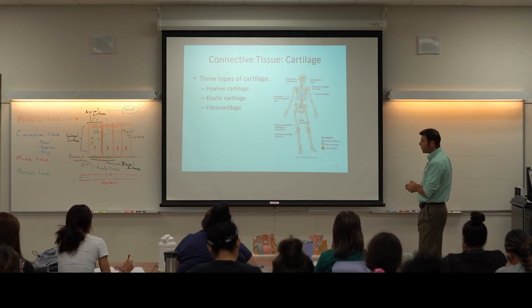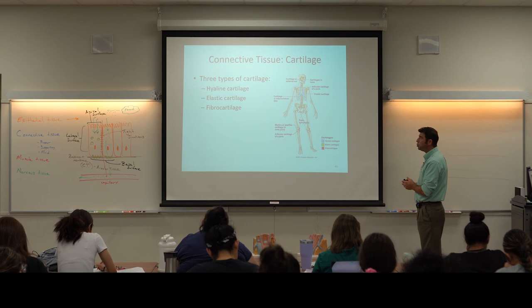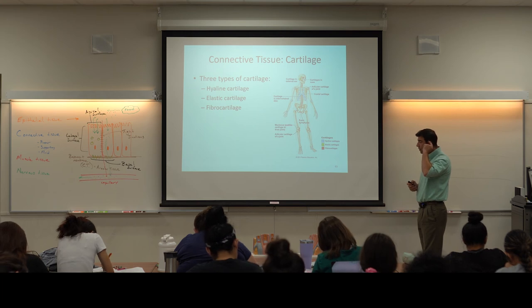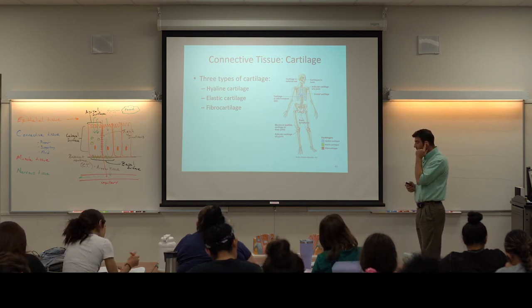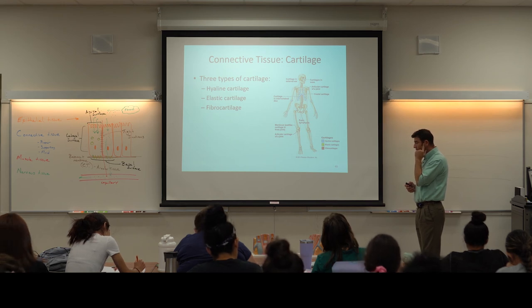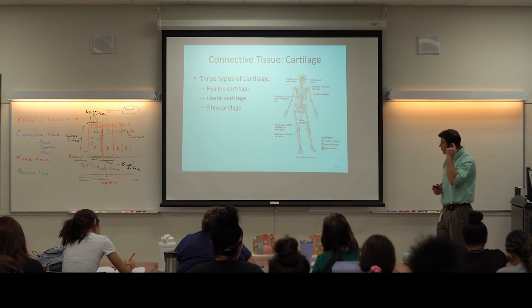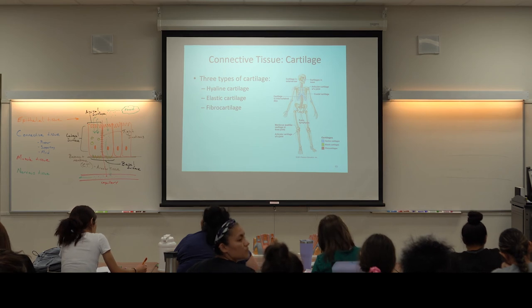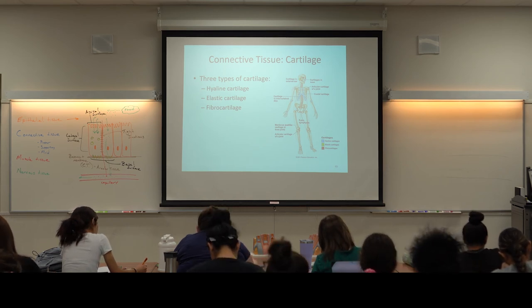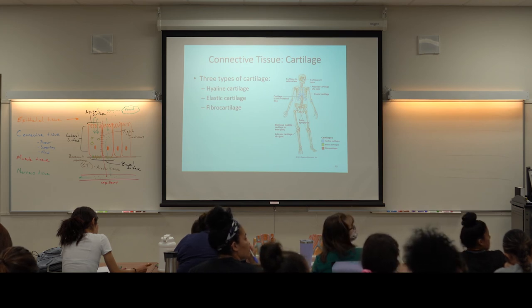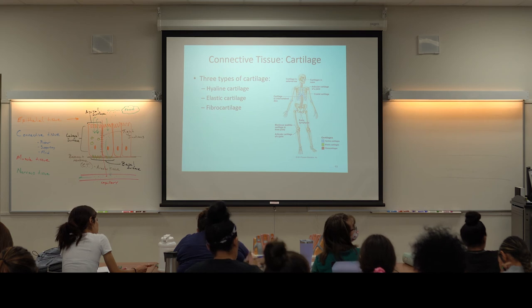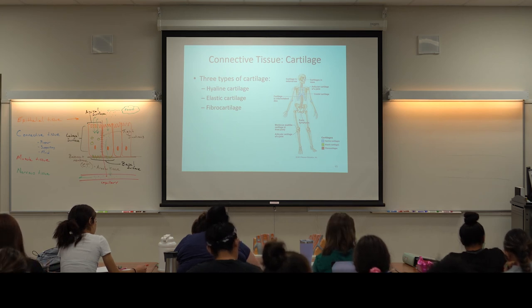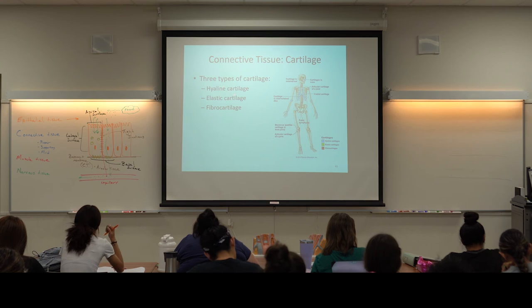Elastic cartilage is the least common type — found in only two places. The cartilage of the earlobe is elastic cartilage: you can bend your earlobe and it snaps back into place thanks to those elastic fibers. The only other place is in the larynx model — here is the epiglottis, a floppy structure on a hinge of elastic cartilage, so it's springy. The earlobe and the epiglottis are the two places we find elastic cartilage.